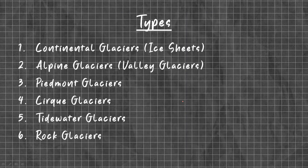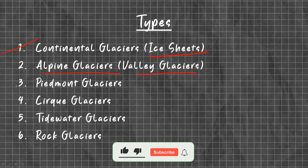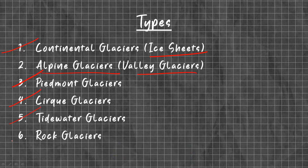What are the types of glaciers? The first one is Continental Glaciers or Ice Sheets, then Alpine Glaciers or Valley Glaciers, Piedmont Glaciers, Cirque Glaciers, Tidewater Glaciers, and Rock Glaciers.